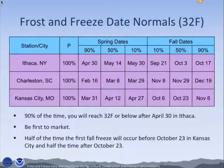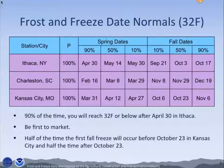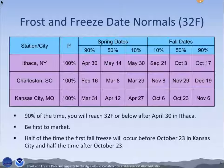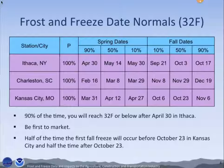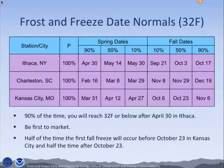I want to show you some results right away. I picked nine stations based on where everyone said they were from. These are frost-free date normals for 32 degrees Fahrenheit. Let's start with Ithaca. The probability of getting down to 32 degrees at least once in the year in Ithaca is 100% — actually that's the case for all of these. So what we want to know is the timing, and the timing is very critical. When can you start planting? In a median sense in the spring, half of the time your last freeze event will occur May 14th or before, and half of the time it will be after.